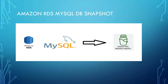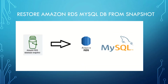Next, I will show you how to create a manual snapshot from an Amazon RDS MySQL database instance. Once the snapshot is created, I will show you how to restore it to a new database instance. Let me log into the Amazon Web Services Management Console and show you the demo.